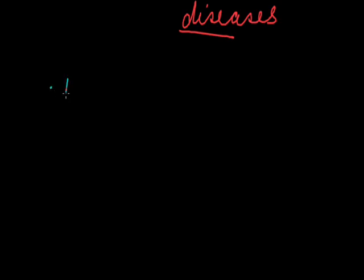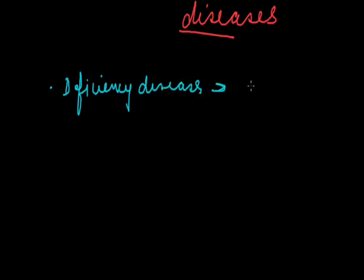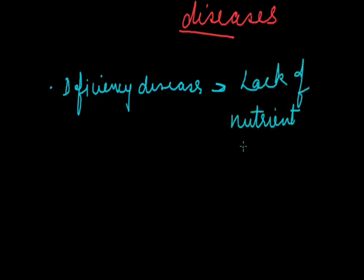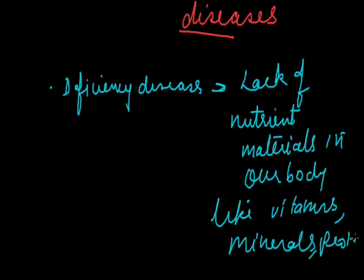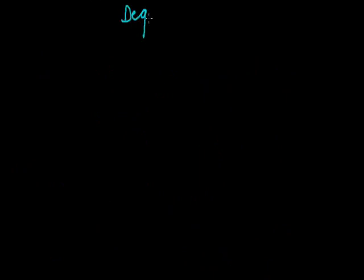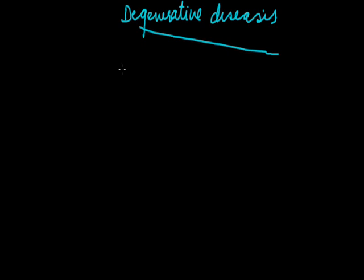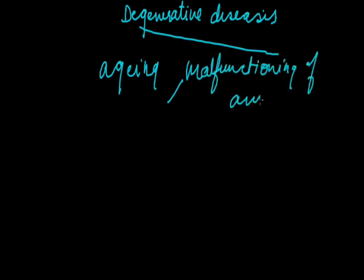Non-communicable diseases can be categorized as follows. First, deficiency diseases, which are caused due to lack of nutrient materials in our body such as vitamins, minerals, and proteins. Second, degenerative diseases, which are caused due to aging or malfunctioning of any organ or part of the body.